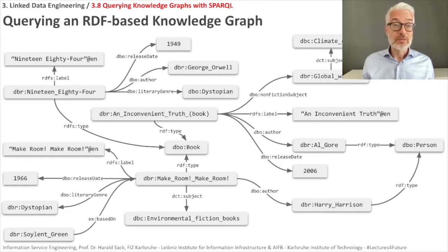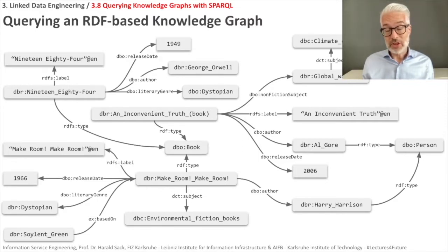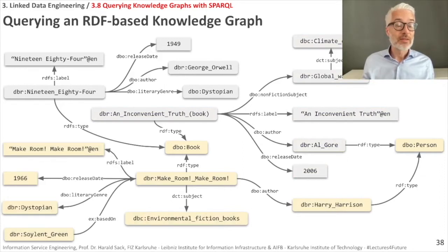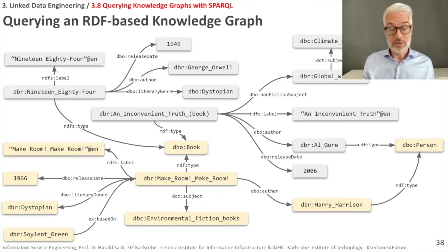We will start with a small example knowledge graph — a small sample taken out of DBpedia, modified according to our needs. In this small RDF-based knowledge graph we have several books. The first book is 1984 by George Orwell, a dystopian novel. Then we have The Inconvenient Truth by Al Gore, which has something to do with global warming and climate change. And we have another book called Make Room, Make Room by Harry Harrison — also a science fiction dystopian novel, which was filmed as Soylent Green from the early 70s with Charlton Heston.